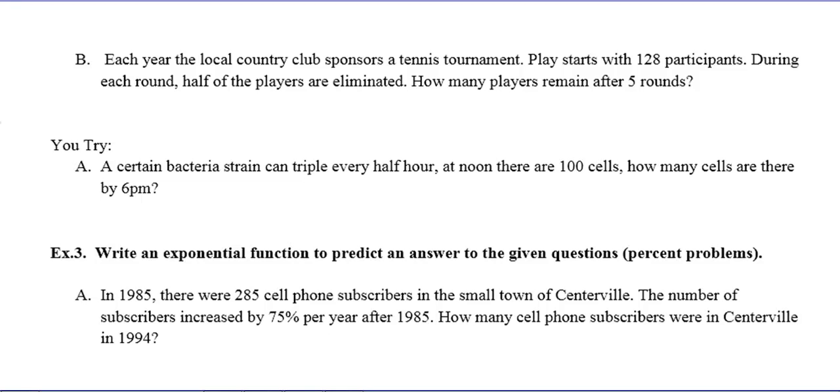Example B: a local country club sponsors a tennis tournament. The play starts with 128 participants. During each round, half of the players are eliminated. How many remain after five rounds? If you think about what's going on, the number of participants is getting smaller per round, so this is a decay model. I'm expecting my B value to be between 0 and 1. A represents the initial amount, which is 128. Every round, half of the people are eliminated, so notice one half is between 0 and 1.